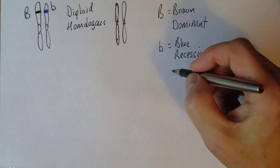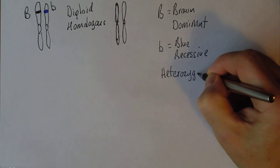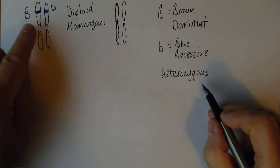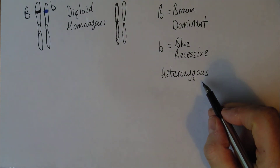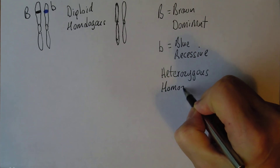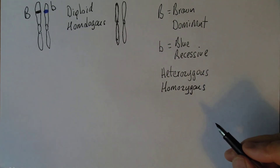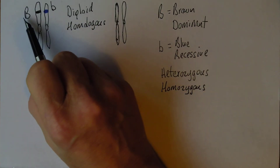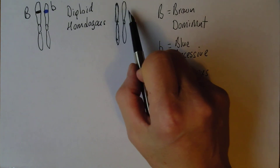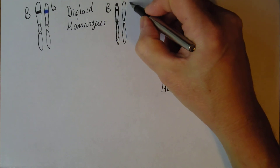We can see that the two genes are different, so this potential mother is heterozygous. Heterozygous means that the two genes are different — there are two different alleles, two different forms of the gene present. If they were the same, we would say she was homozygous. Homozygous means the two genes are the same. This potential dad here — let's presume he's the same, with a gene for brown eyes and a gene for blue eyes.